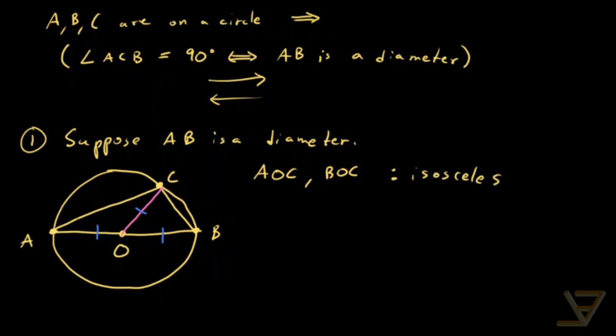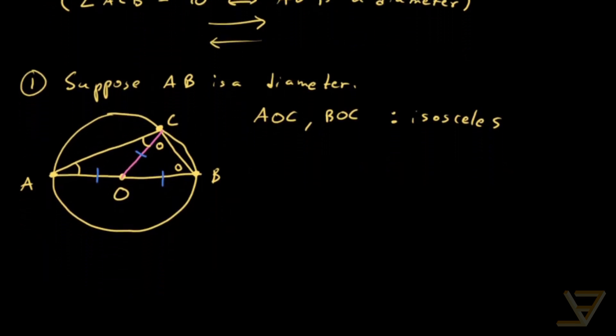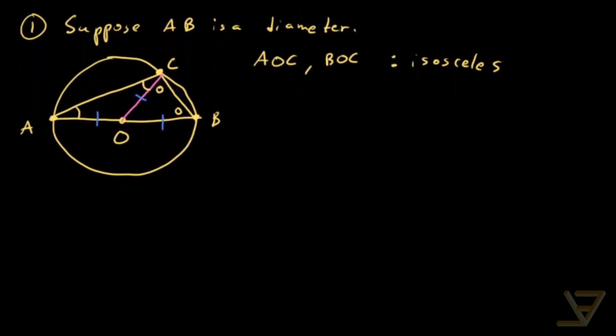That means that this angle and this angle are the same. That allows us to make a certain computation that's going to be handy right now. So remember, we want to show that angle ACB is 90 degrees.